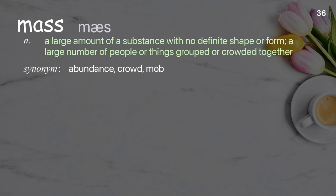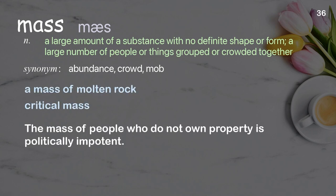Mass: a large amount of a substance with no definite shape or form; a large number of people or things grouped or crowded together. Examples: a mass of molten rock, critical mass. The mass of people who do not own property is politically impotent.